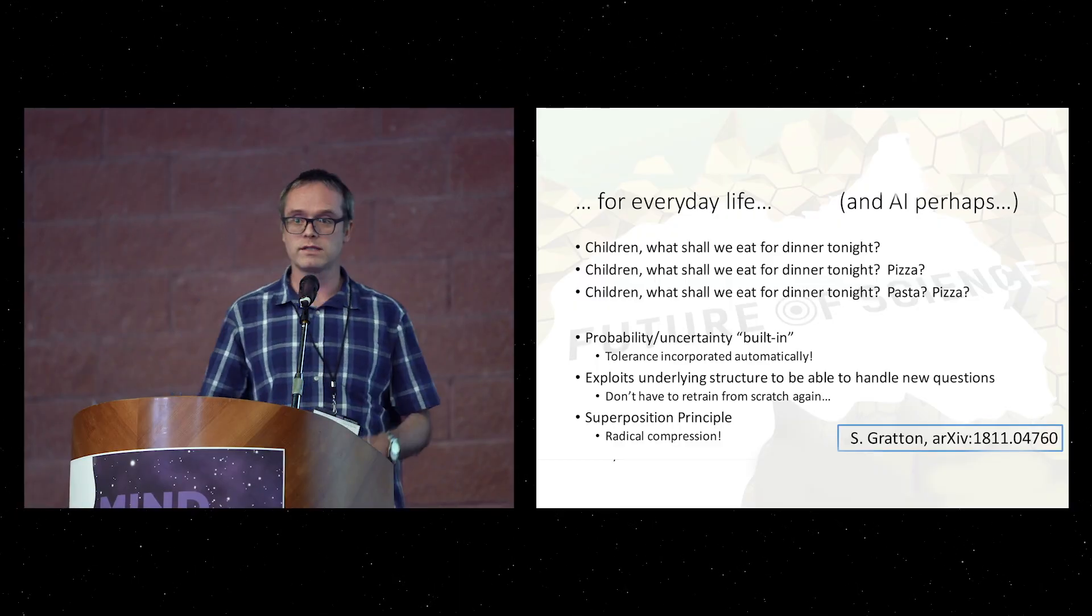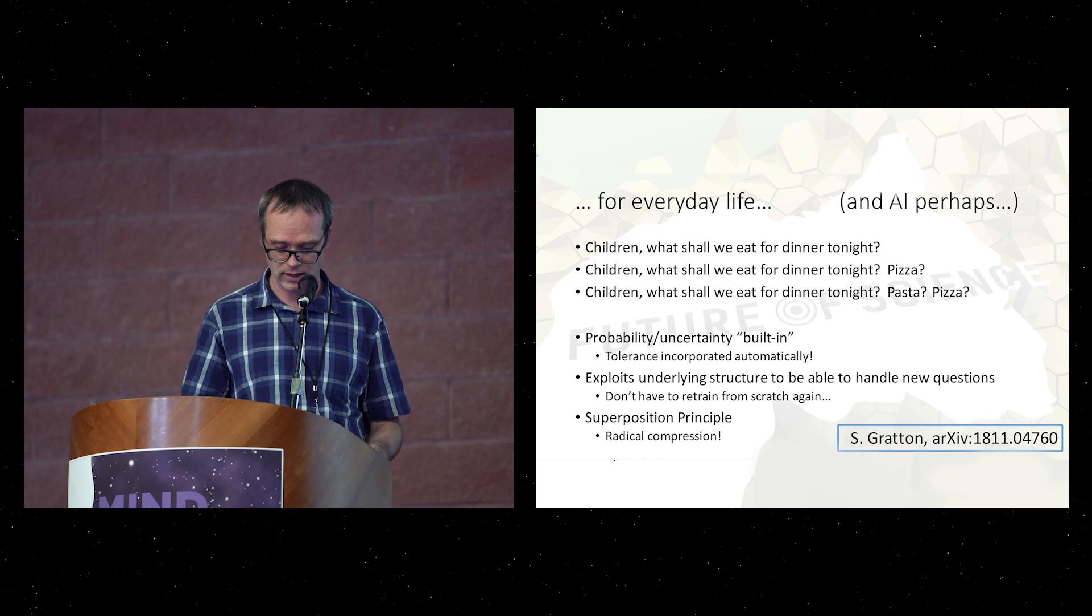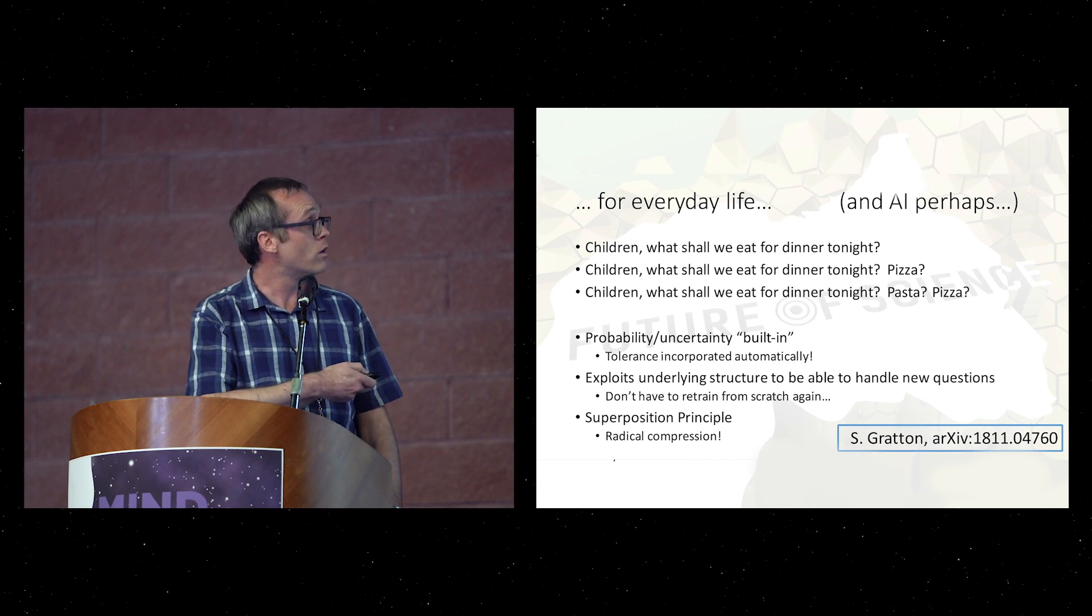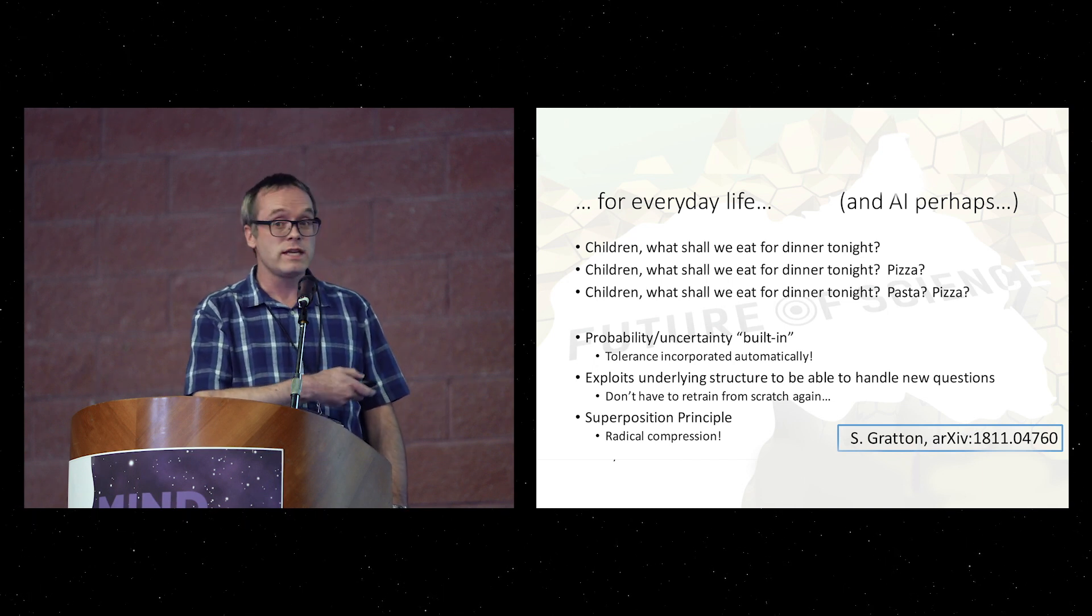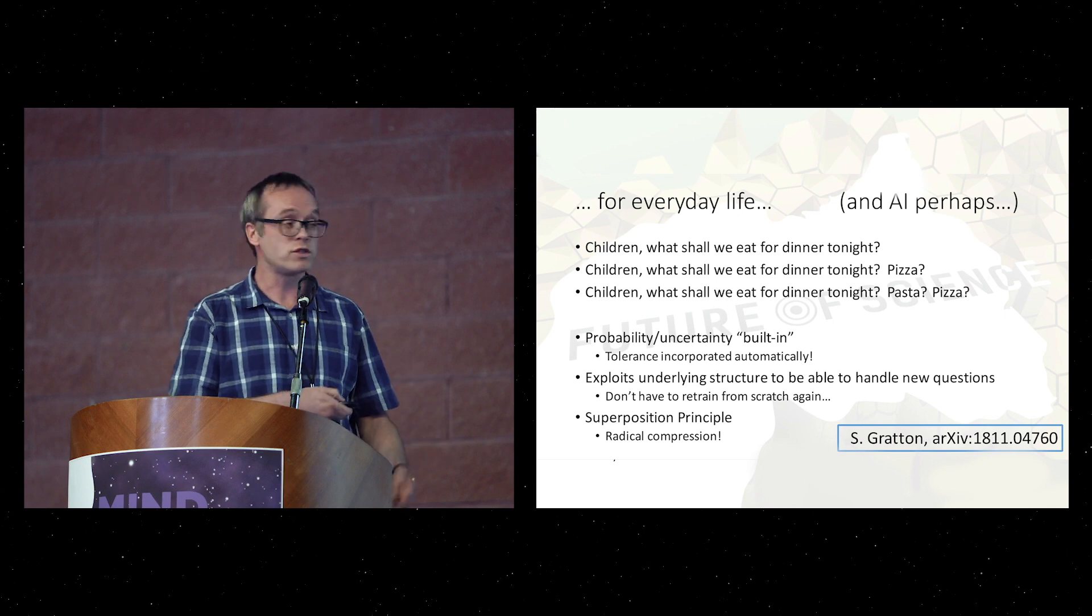But what does this do for reasoning, for example? Say your output from your machine learning algorithm is a state vector, what you gain. Well, probability or uncertainty in your response is built in. So, you should be a tolerant AI, not an authoritarian one.